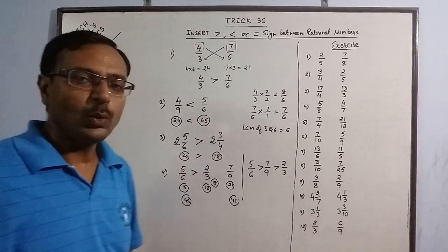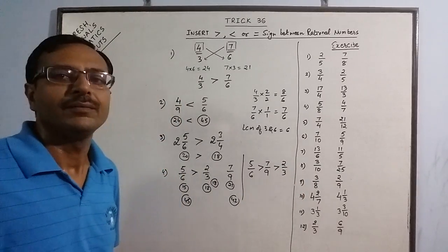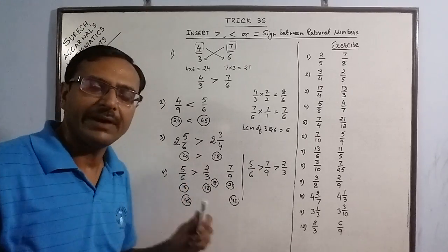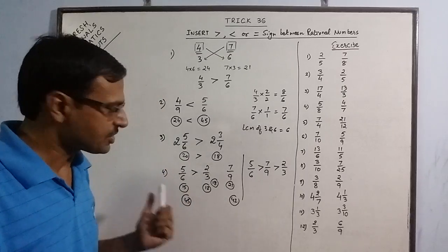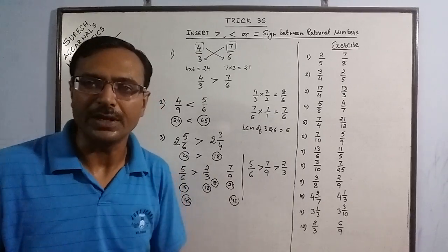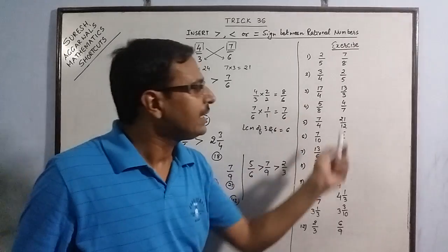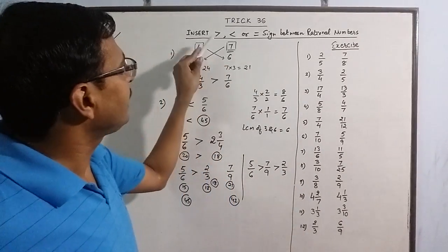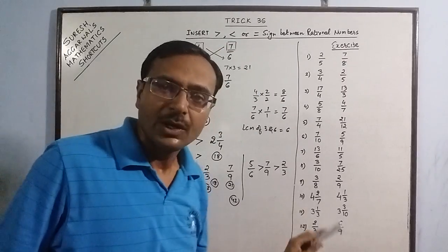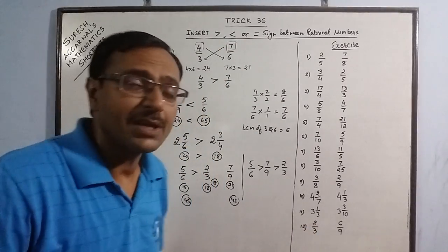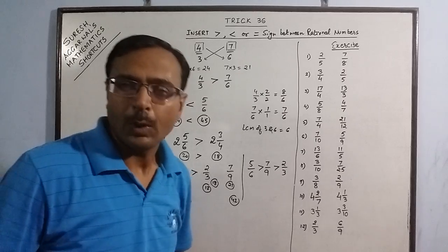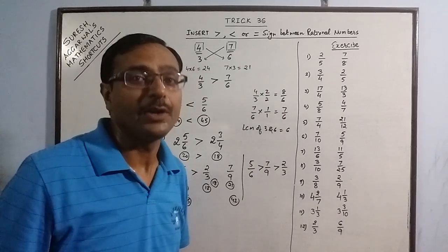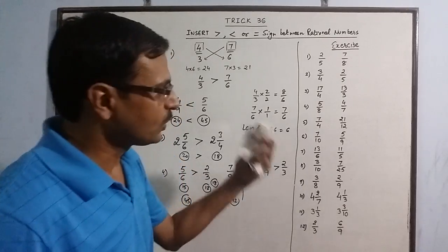See, we don't have to do any writing work. Just mentally we can calculate the cross multiplied products and find out which of the given rational numbers is greatest or smallest. Now let's do one activity. I have 12 questions written here and I have to insert a greater, less, or equal to sign. See how much time I take to do all these problems, whereas by traditional method each question will consume one minute at least.